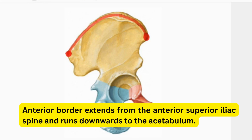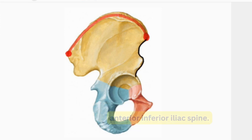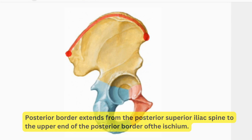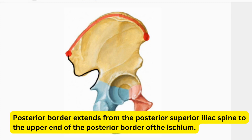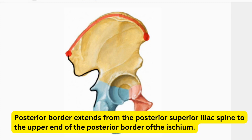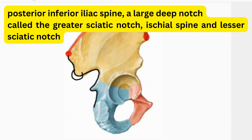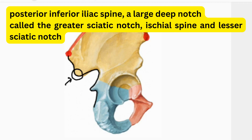The anterior border extends from the anterior superior iliac spine running downward to the acetabulum. At the middle of the anterior border you will find a projection known as the anterior inferior iliac spine. The posterior border extends from the posterior superior iliac spine running downward to the upper part of the ischium. Tracing the posterior border, you will find a bony projection a few centimeters inferior to the posterior superior iliac spine, known as the posterior inferior iliac spine. Just below that is a large depression known as the greater sciatic notch.